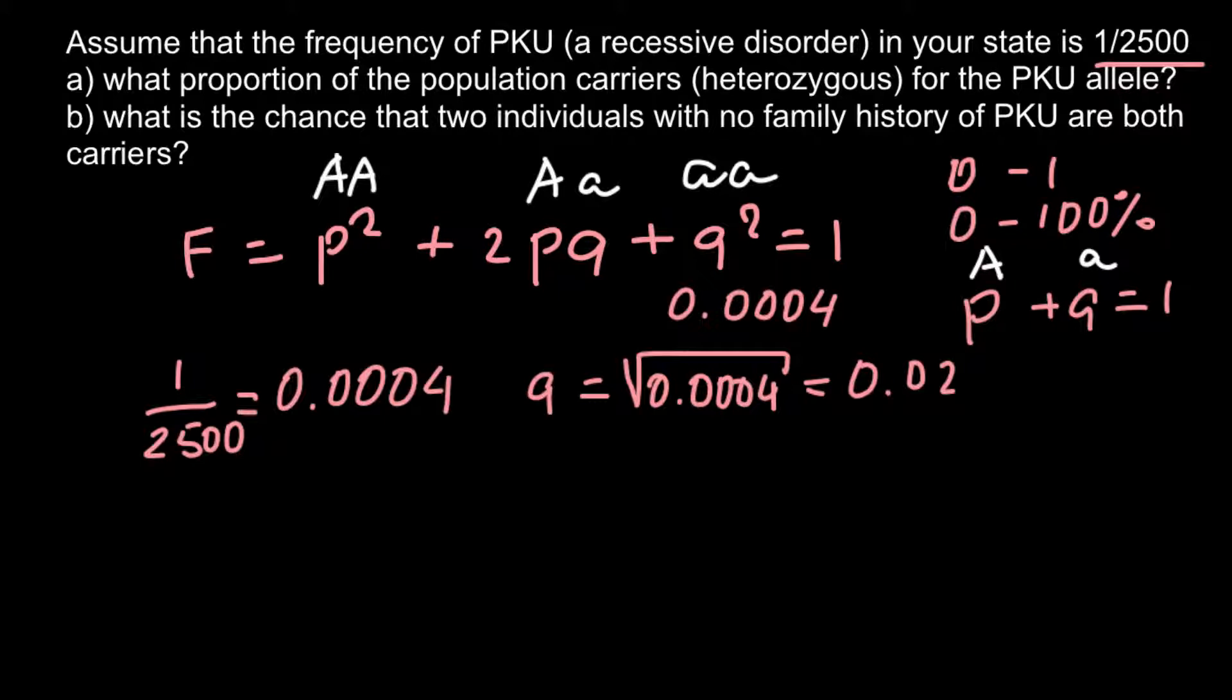Now when we know Q, this is 0.02, we can easily find the frequency of allele P. And as you see, P plus Q should equal to 1, so we know that P would be 0.98. Now when we know the frequency of both allele P and allele Q, we can use this part of the formula in order to find the frequency of people who are going to be carriers or who are going to be heterozygous.